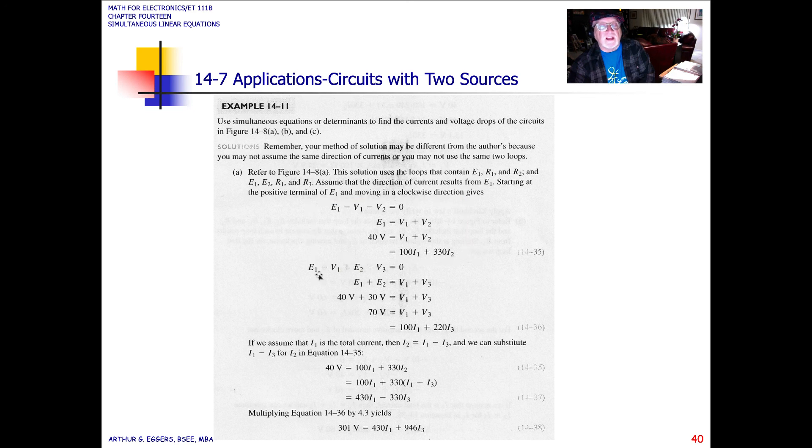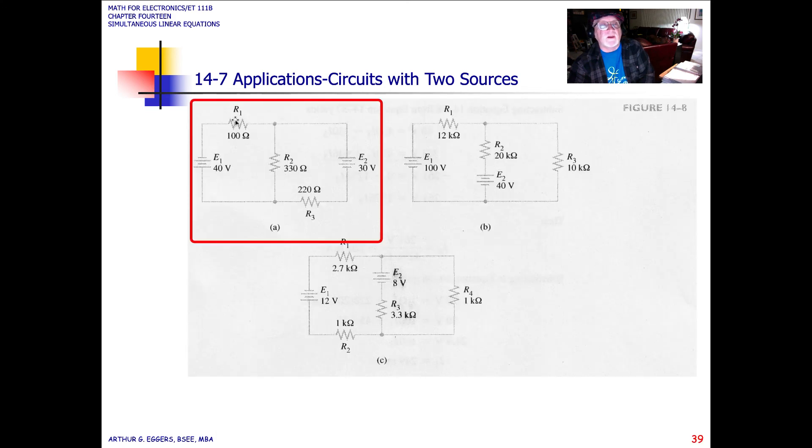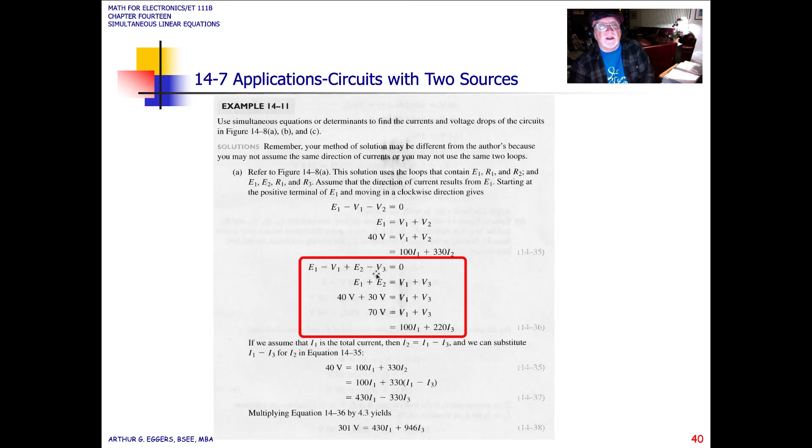For the next one, E1 minus V1 plus E2 minus V3. So if we look at that, we've got R1, E2, and R3 as our outside equation. So this is the outside equation. So in gathering our terms, E1 plus E2 is equal to V1 plus V3. Again, since we know our voltages, sources, 40 volts and 30 volts, that simply becomes 70, and we're left with V1 plus V3, to which we can substitute our IR expression, the current, and the resistance.